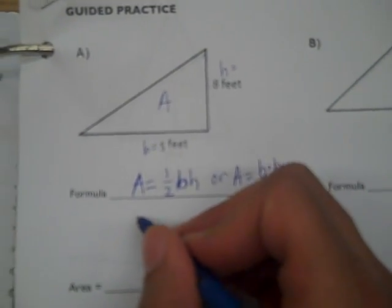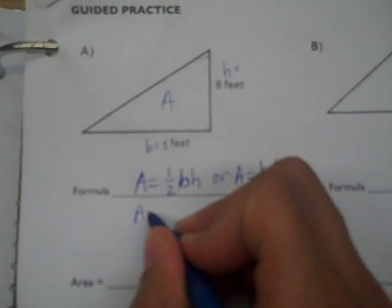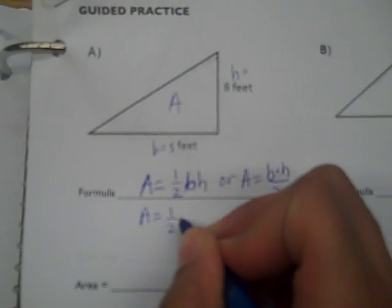Now what I'm going to do is plug in my information, because I've interpreted the information properly. And then I'm going to substitute. One-half times five times eight. Let's do the multiplication of the whole numbers first.